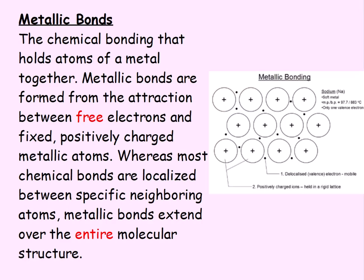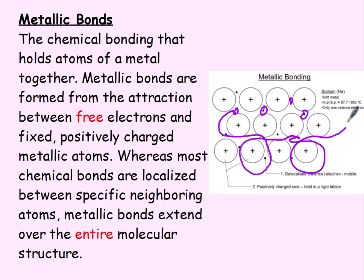Metallic bonds are formed from the attraction between free electrons and fixed positively charged metallic atoms. The electrons can move from one side to another. We often refer to these as a sea of electrons. Whereas most chemical bonds are localized between specific neighboring atoms, metallic bonds extend over the entire structure.